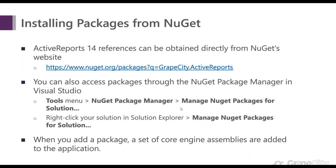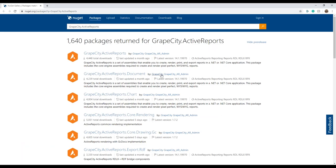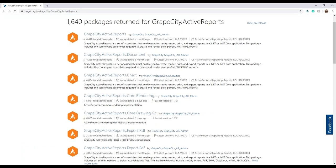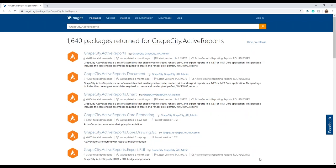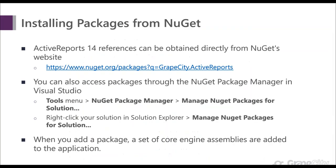There are two ways to obtain packages from NuGet. You can pull them directly from NuGet's website, which contains all the GrapeCity Active Reports packages. You can also access the packages through the NuGet Package Manager in Visual Studio — go to the Tools menu, NuGet Package Manager, and select Manage NuGet Packages for Solutions.